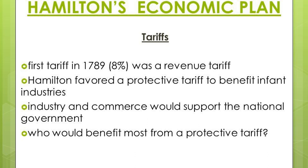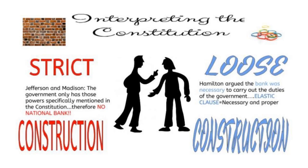Hamilton favored tariffs — taxes on imported foreign goods. Tariffs had two purposes: they raised money for the government and encouraged the growth of American industry. The government placed the highest taxes on foreign goods that Americans used in large quantities, ensuring a steady flow of income and encouraging people to buy less expensive American-made goods. Hamilton also called for the creation of a national bank, which would give the government a safe place to keep money, make loans to government and businesses, and issue bank notes.